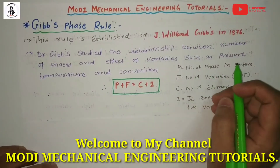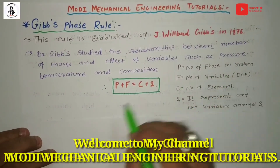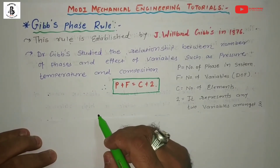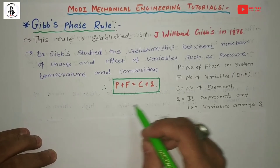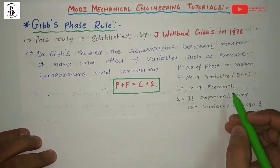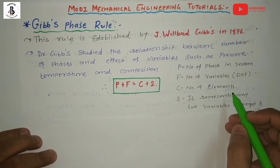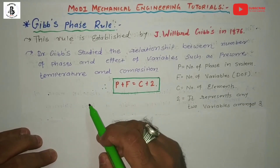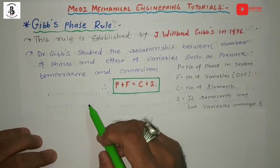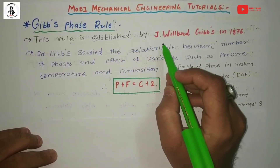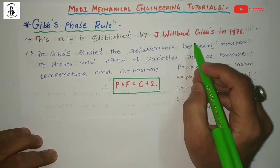Welcome to Modi Mechanical Engineering Tutorials. In this video I would like to explain the Gibbs phase rule, which is used to make a relationship between the number of phases and the effect of variables on different kinds of compositions of metallic structure. This rule was established by J. Wilbert Gibbs in 1876.